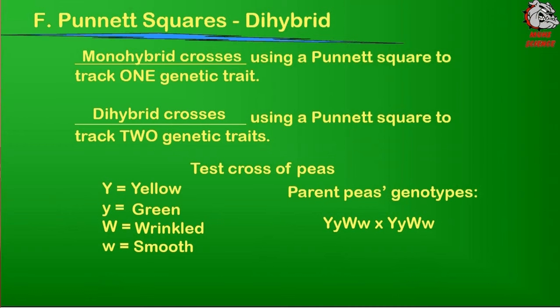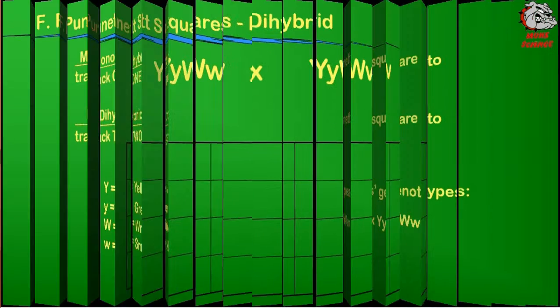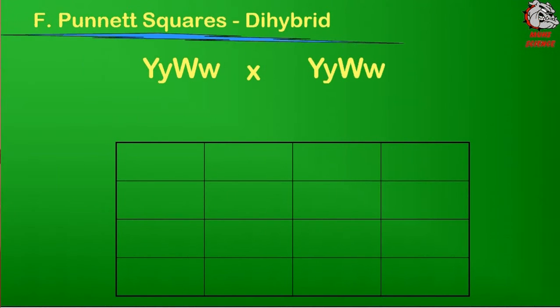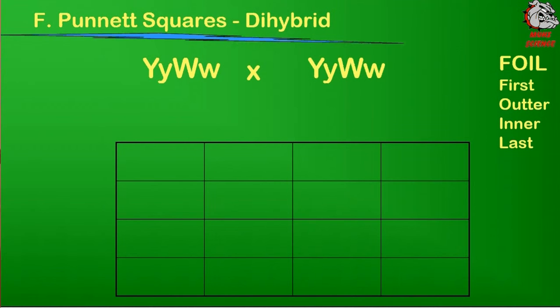Now in order to set up this cross, you have to figure out what the gametes are going to look like. I always remind people to think about the FOIL method that you learned in your algebra classes. FOIL stands for first, outer, inner, and last.